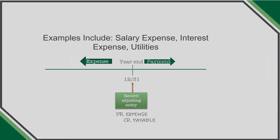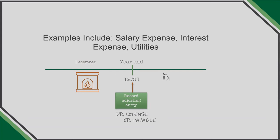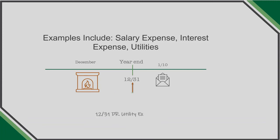Someone might inquire as to why companies don't just pay expenses when they occur. The reason is practical. Think about a utility bill. In the month of December, you may use a lot of electricity or gas to keep your home warm. The bill for the month of December of $125 doesn't arrive until some point in January after the company has calculated your energy usage. The cost for using the energy relates to the month of December and thus should be captured as a December expense, even though you may not pay the utility company until a future date in January.